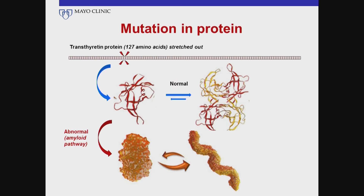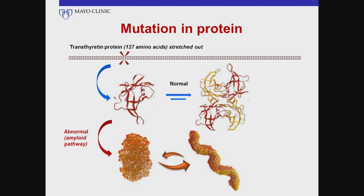So are there other options? There's a lot of research going on right now, which is very exciting. We don't have perfect solutions yet, but it's definitely a work in progress. One approach, similar in concept to liver transplant, is using fancy molecular techniques to actually prevent the abnormal transthyretin protein from even being formed — basically stopping production of abnormal transthyretin. Clinical trials are ongoing, and we're hopeful this will be the wave of the future.